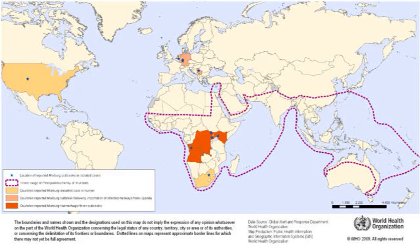MVD is clinically indistinguishable from Ebola virus disease. MVD can be confirmed by isolation of Marburg viruses or by detection of Marburg virus antigen or genomic/subgenomic RNAs in patient blood or serum samples during the acute phase. Marburg virus isolation is usually performed by inoculation of Grivet kidney epithelial Vero E6, MV104 cell cultures, or by inoculation of human adrenal carcinoma SW13 cells, all of which react to infection with characteristic cytopathic effects.